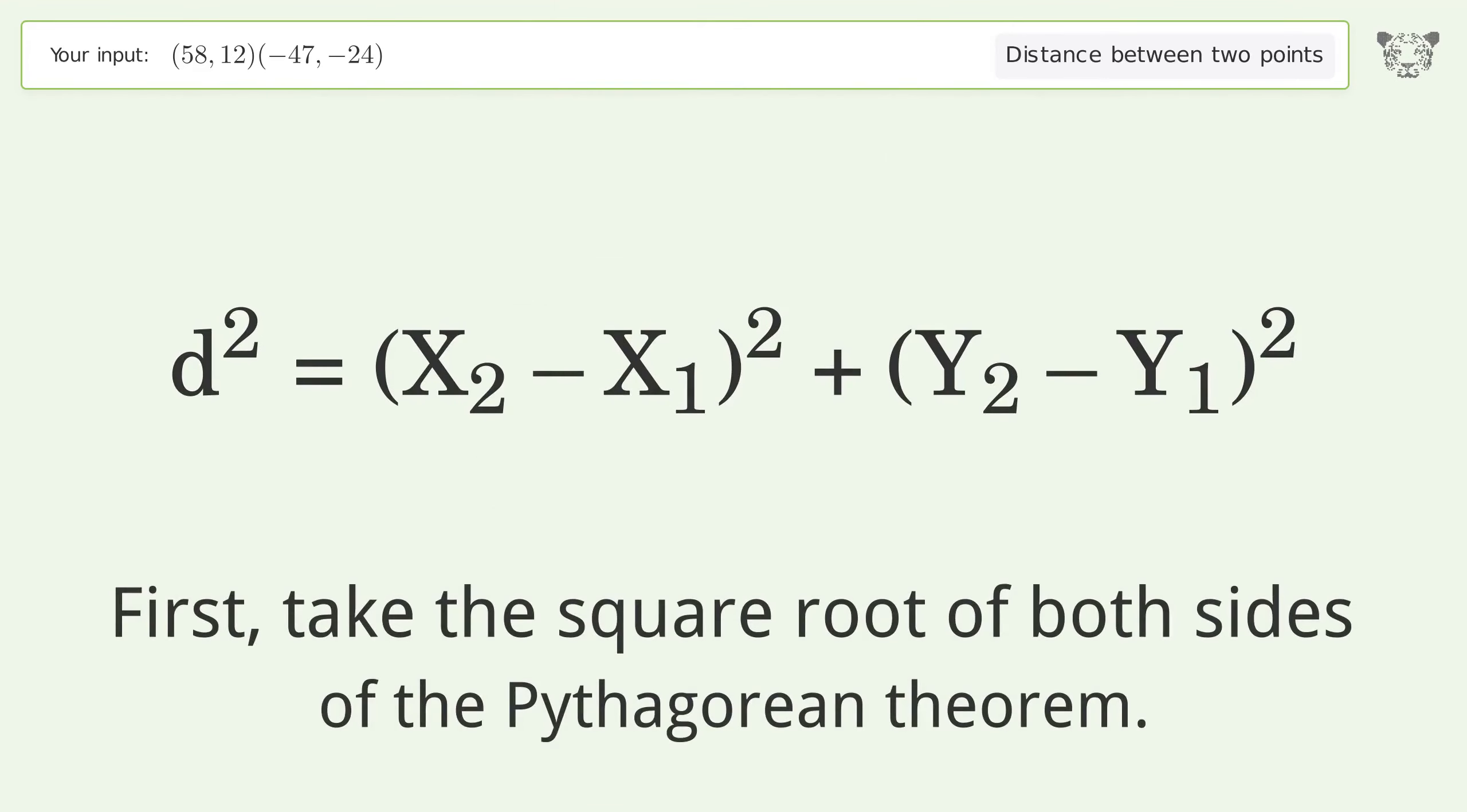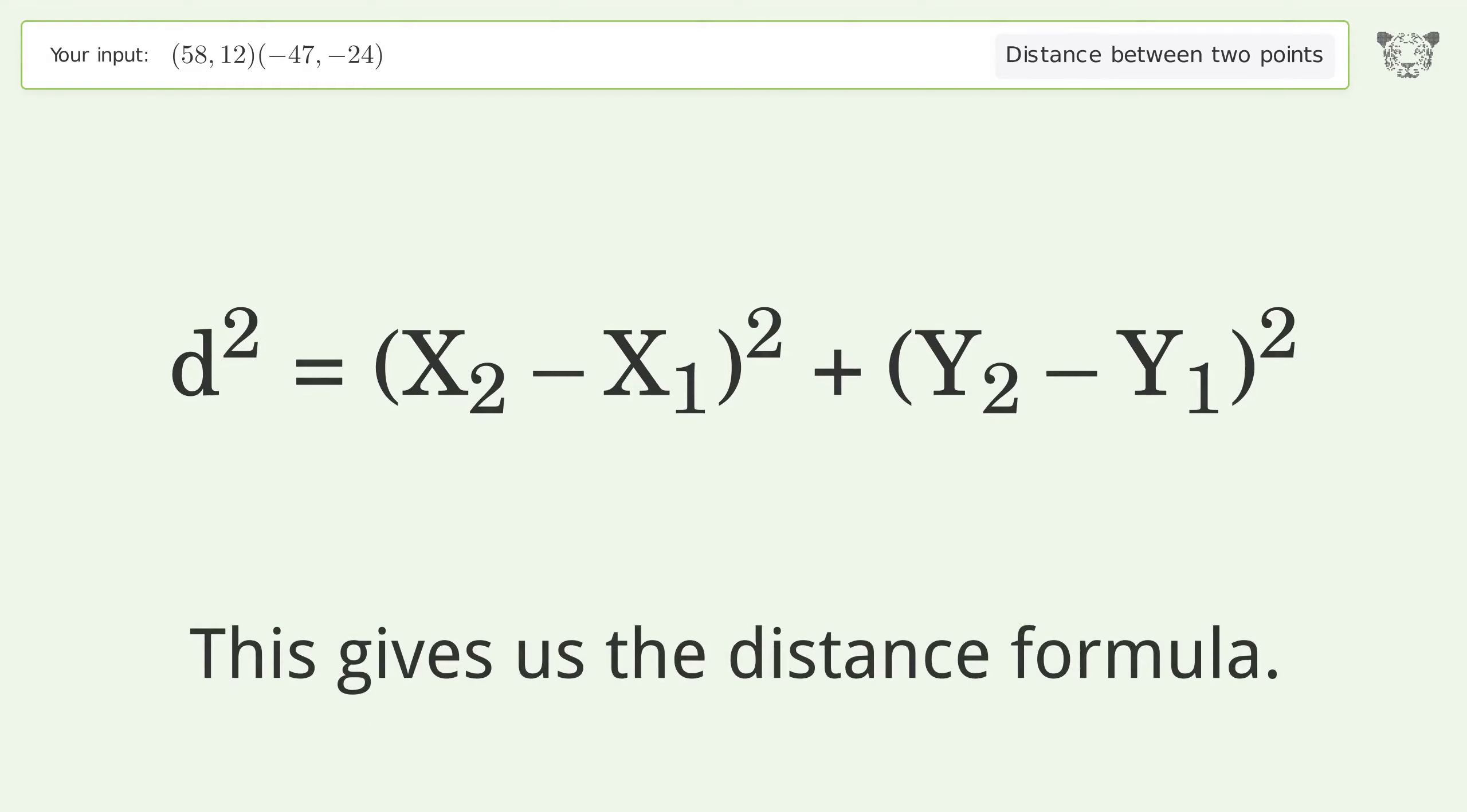First, take the square root of both sides of the Pythagorean theorem. This gives us the distance formula.